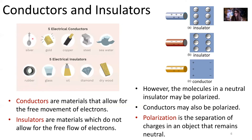Here are some examples of electrical conductors. Metals are really great examples: silver, gold, copper, steel. Also seawater — because seawater has salt in it, and with that saline solution you can get free ions that move around within the material, setting up a flow of charge. Some really great examples of insulators are rubber, glass, oil, diamonds, and wood — as long as it's dry, not wet. Materials that are wet tend to be better conductors of electricity, so wet wood will not be as good an insulator as dry wood.